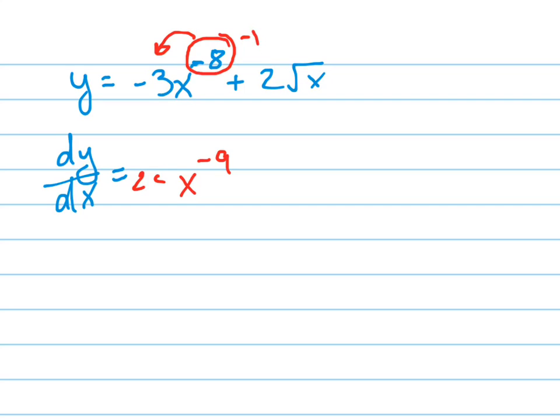Multiplying it down is going to turn it into 24. And then the same thing with this. Remember, square root of x is the same as 1 half power. So I'm going to do the same thing. Multiply that down.